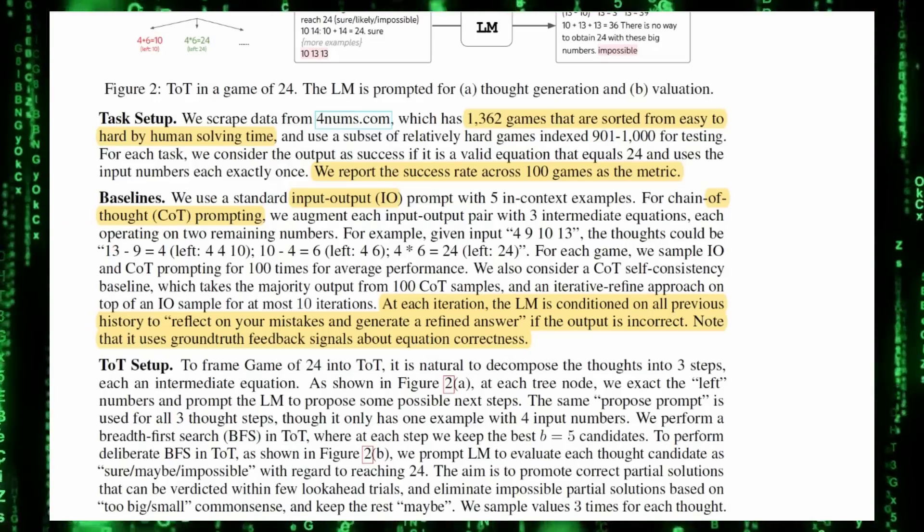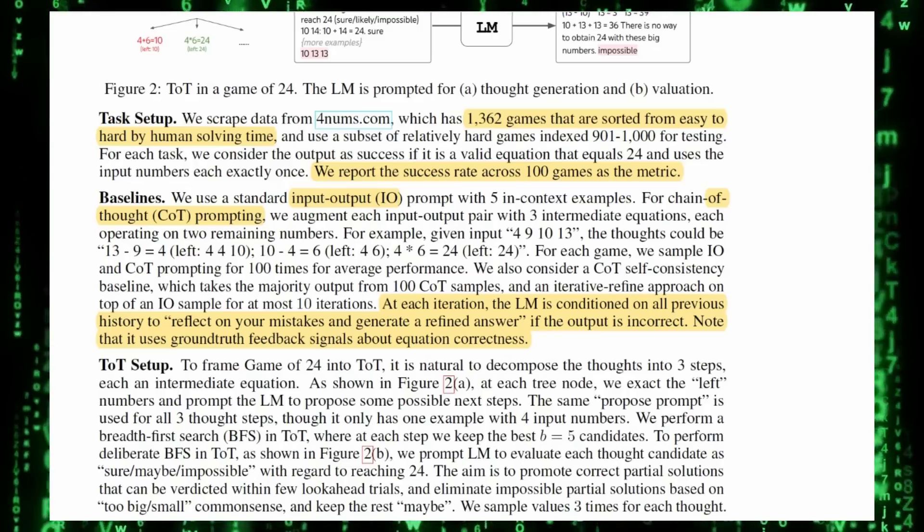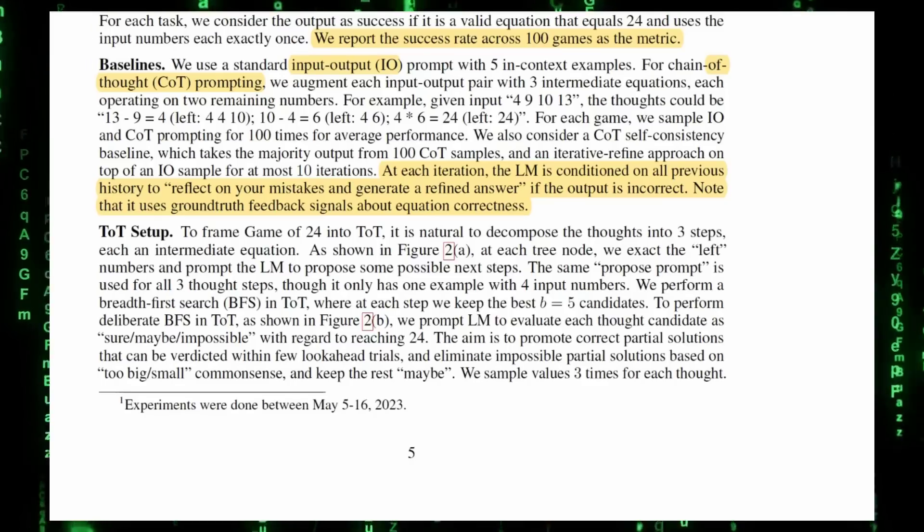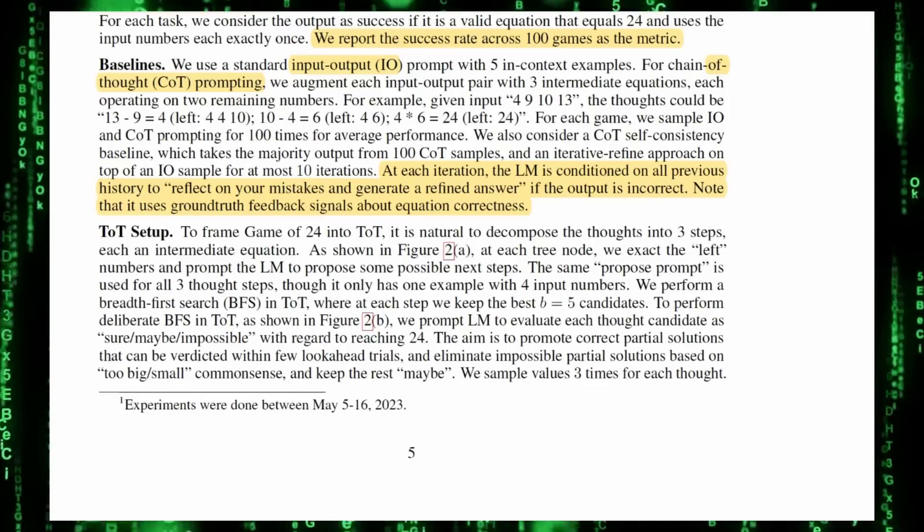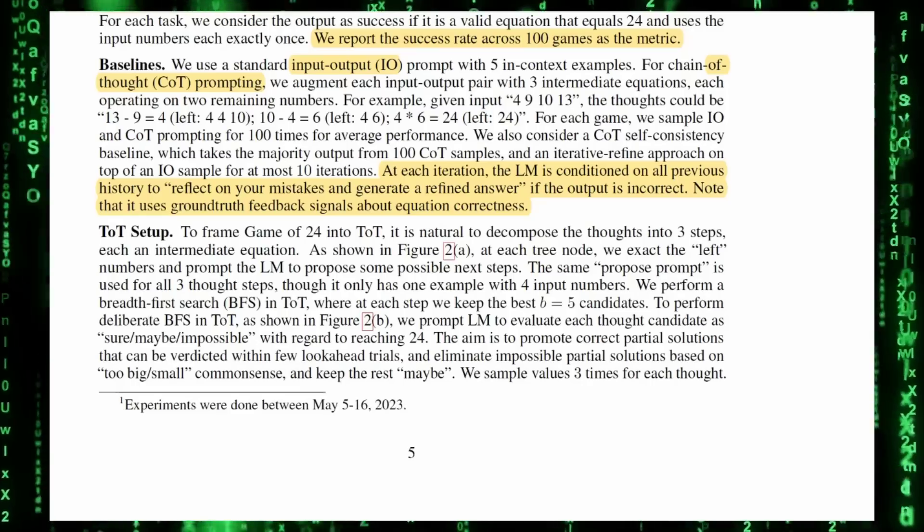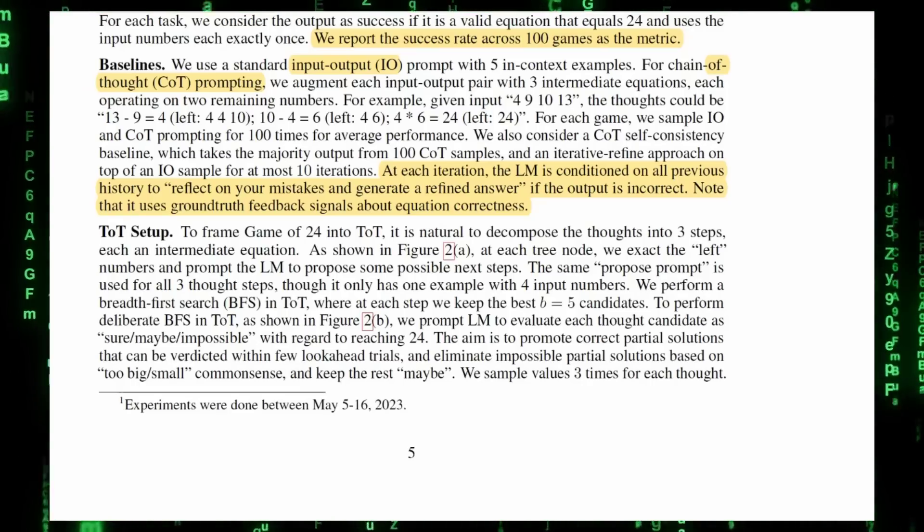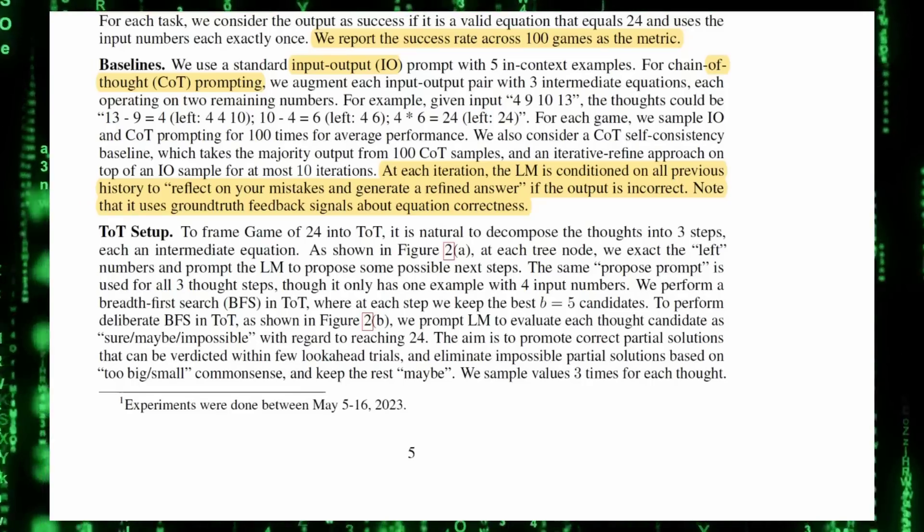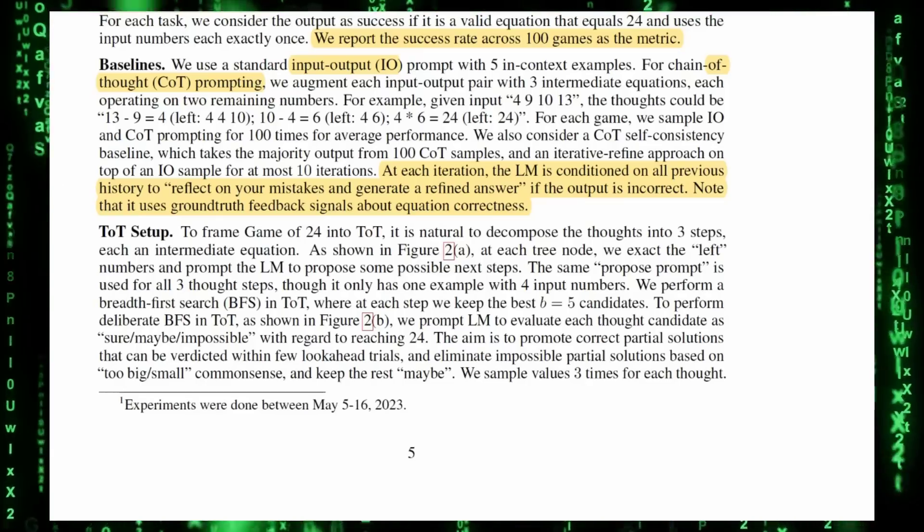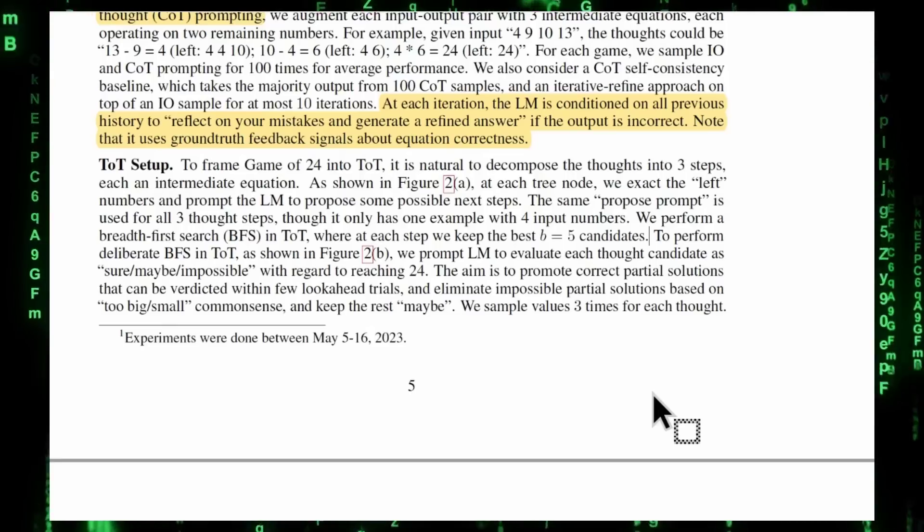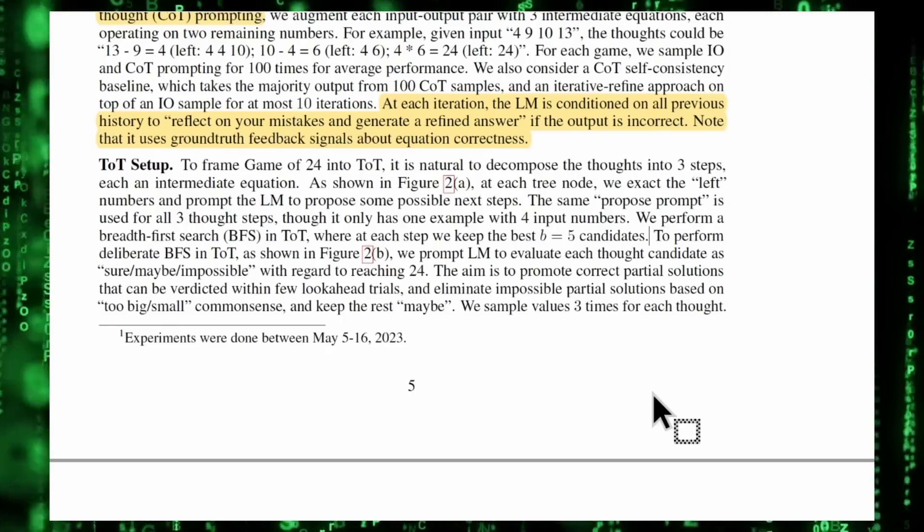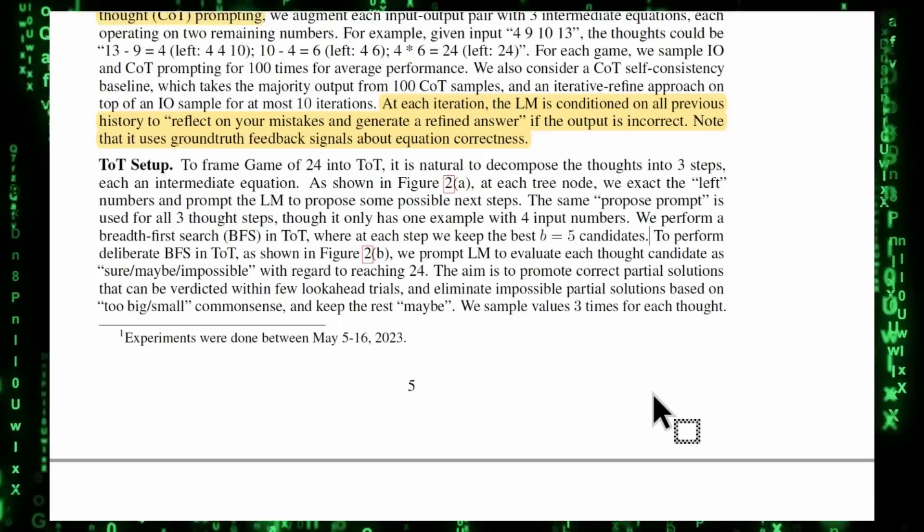Note that it uses ground truth feedback signals about equation correctness. Ground truth is basically the real answers, the answers that we know to be correct for the AI to compare its results against. In the tree of thoughts approach, the chat GPT is asked to think through all the possible combinations. Then they prompt that language model to evaluate each thought candidate as sure, maybe or impossible, with regard to it being able to reach 24, the answer we need. And then they perform a breadth-first search in tree of thoughts, where at each step they keep the best five candidates.